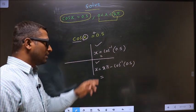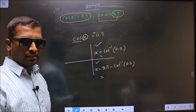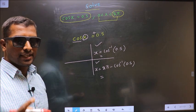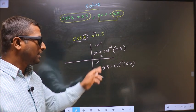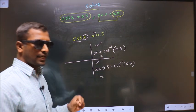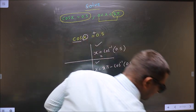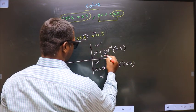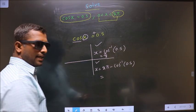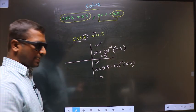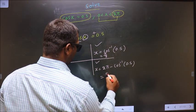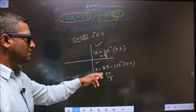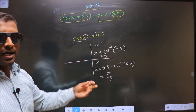Make sure your calculator is in radians mode before calculating. Cos inverse of 0.5 gives pi by 3, and 2 pi minus pi by 3 gives 5 pi by 3. These two values are our answer.